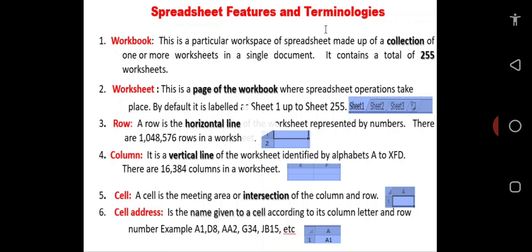The screen clip shows A as the column while one identifies the row. Number six, the cell address. The cell address is the name given to a cell according to its column letter and row number. Examples: A1, D8, AA2, G34, JB15, and others.